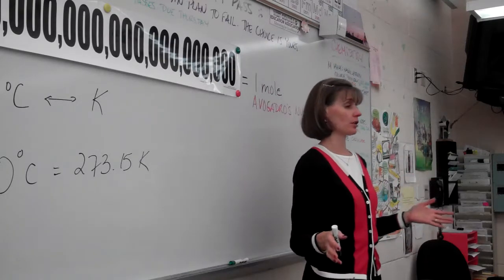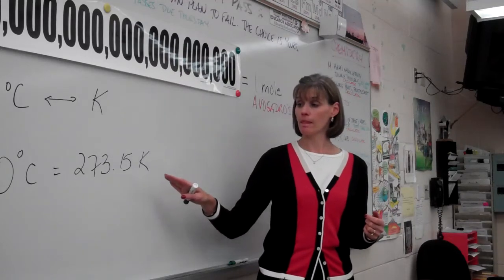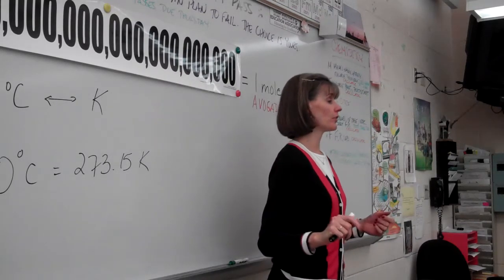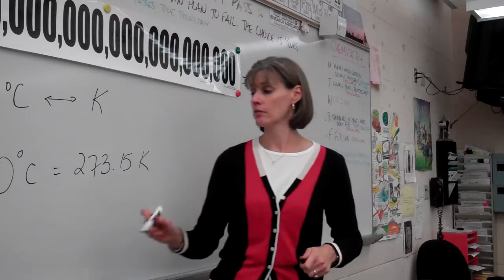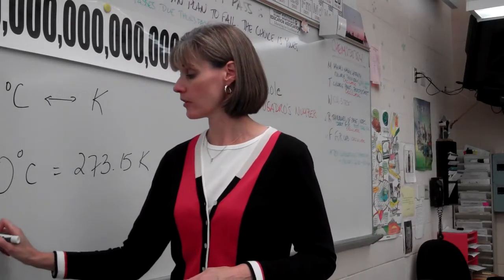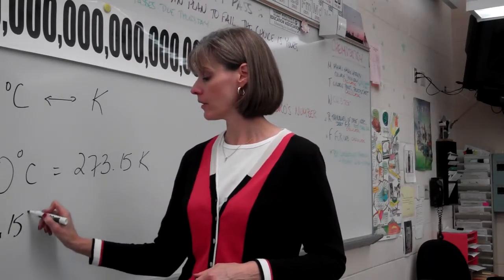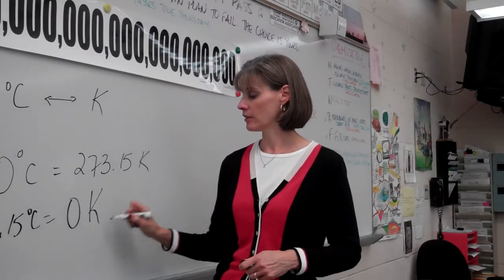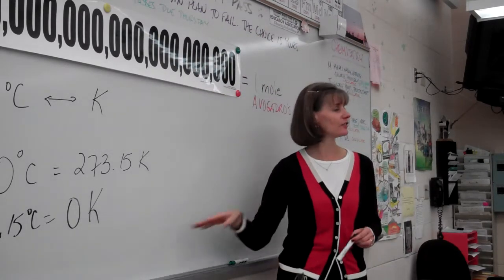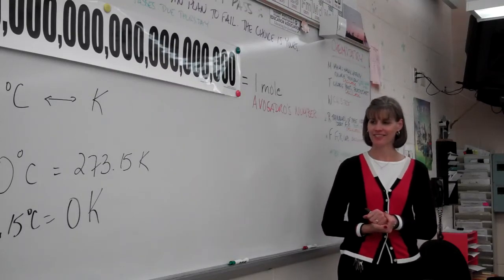zero on the Celsius scale is the freezing point of water. Zero on the Kelvin scale is absolute zero. Okay. Supposedly, where all molecular motion stops. So, negative 273 Celsius, negative 273.15 degrees Celsius is zero Kelvin. Not okay. Zero Kelvin. Okay.